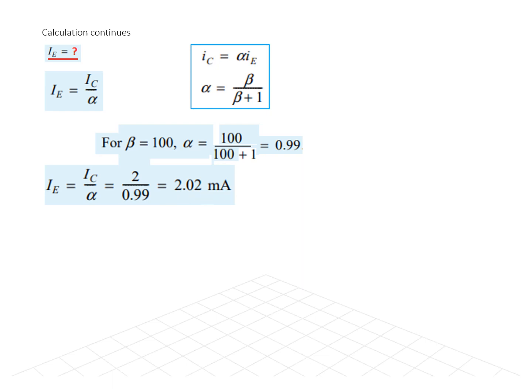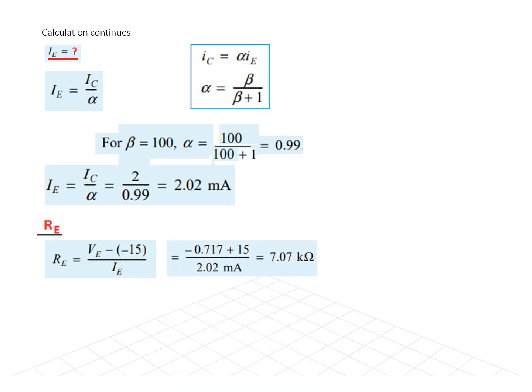Now that we have both VE and IE, we can find RE. Plugging in: RE = (VE minus VEE) / IE = 7.07 kilohms. So our final designed circuit has RC = 5 kilohms and RE = 7.07 kilohms. I hope you have been able to follow this solution.